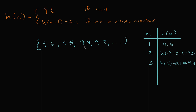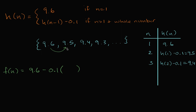Let's pause and define this arithmetic sequence explicitly. Let's call it f of n. It's going to be 9.6, but we subtract 0.1 a certain number of times depending on the term. For the first term we subtract zero times, the second term once, the third term twice, the fourth term three times. So for the nth term, we subtract 0.1 exactly n minus one times: f of n equals 9.6 minus 0.1 times n minus one.